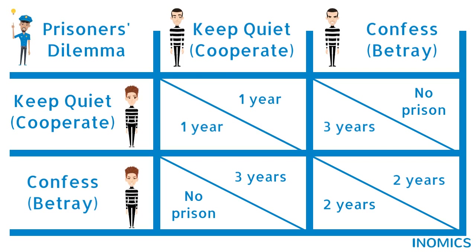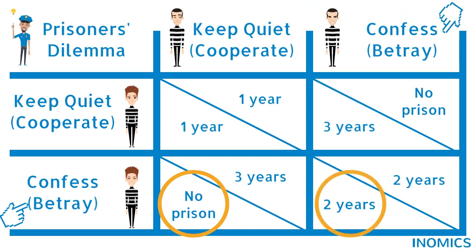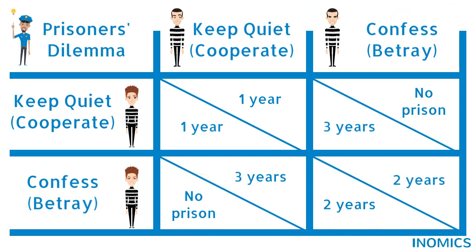However, neither Holly nor Max choose to stay quiet. From an individual standpoint, there is an incentive to betray. If Holly betrays and Max doesn't, she'll walk free. If Max also confesses, then two years in prison is better than three. Therefore, if Holly and Max act rationally to maximize their own payoffs, they will confess to avoid serving the maximum three-year term.